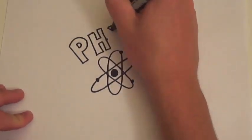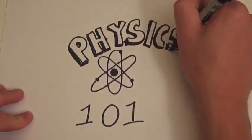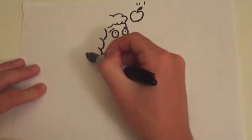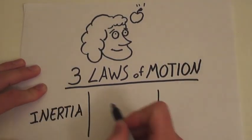Hi there, and welcome to Physics 101. Today we will be teaching you about Newton's three laws of motion: inertia, force equals mass times acceleration, and equal and opposite reactions.